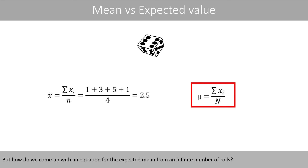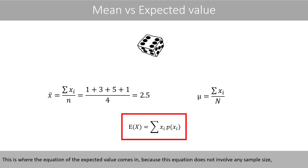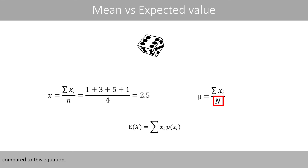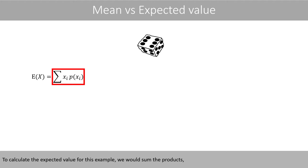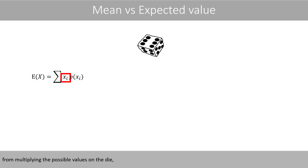But how do we come up with an equation for the expected mean from an infinite number of rolls? This is where the equation of the expected value comes in, because this equation does not involve any sample size compared to the previous equation. To calculate the expected value for this example, we would sum the products from multiplying the possible values on the die with the probabilities to get these values.